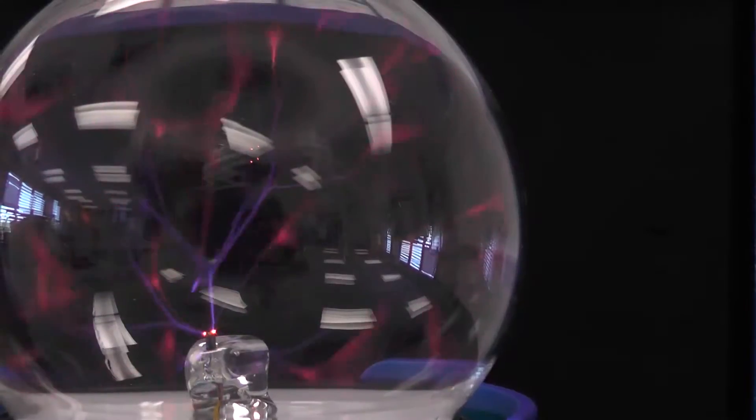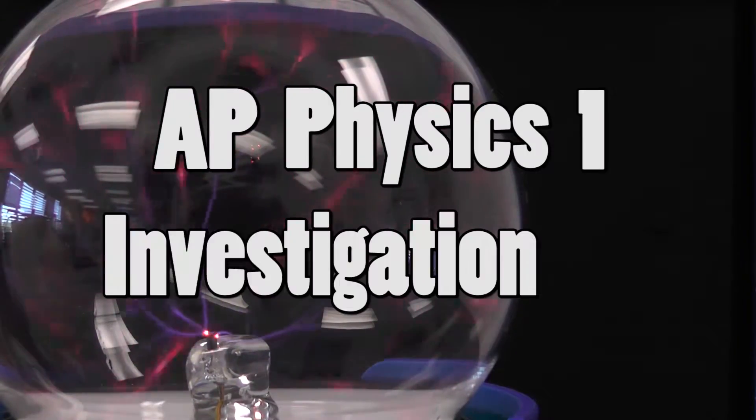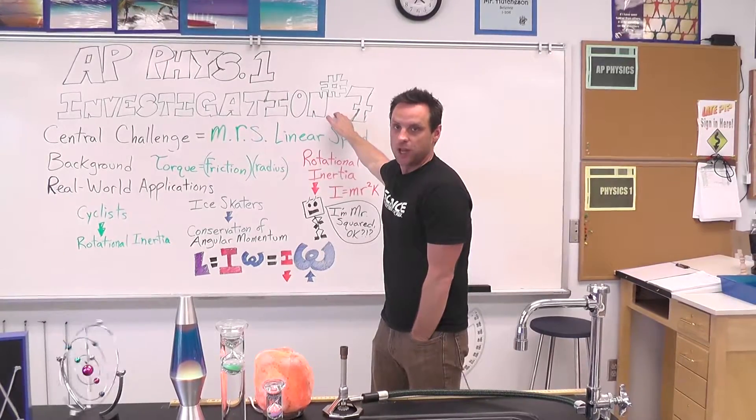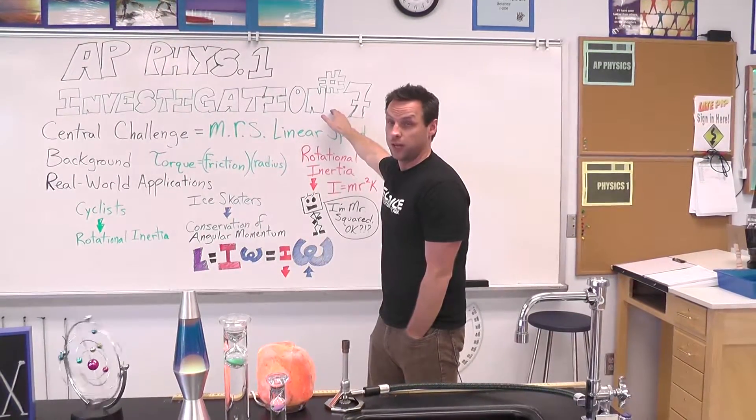So today we're looking at AP Physics 1 investigation number 7 from the College Board. This investigation is all about rotational motion.